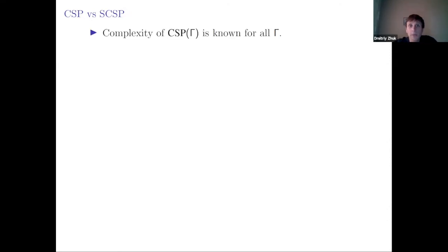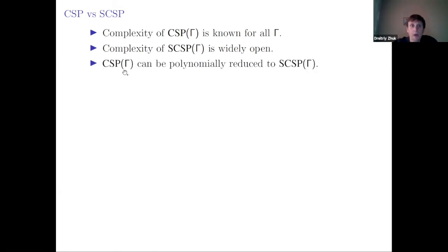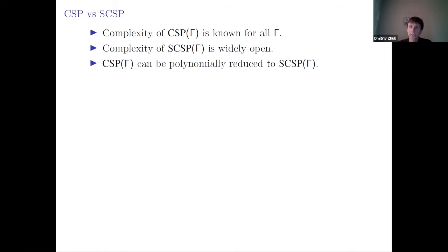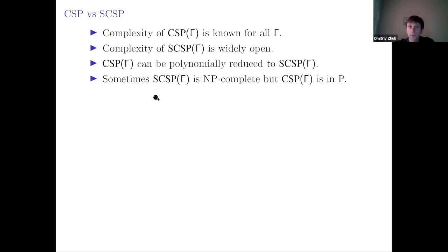Let's compare CSP and surjective CSP. The complexity of CSP is known for all gamma. The complexity of surjective CSP is widely open. It is easy to see that CSP over gamma can be polynomially reduced to surjective CSP — we can always add dummy variables we never use, and using these variables we can make any solution surjective. And as we saw, sometimes surjective CSP is harder.